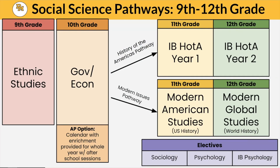Here at Delmar, we have a pretty unique pathway we're excited to introduce this coming year. Our 9th grade course is an elective, so students can choose to take it. In 10th grade, all students take Government and Economics together. We do have an AP option where students can use a calendar we provide to prepare for the AP exam on their own, which helps prepare students who might want to take the IB pathway later on or explore a modern issues pathway, developing skills they'll need in 11th and 12th grade.